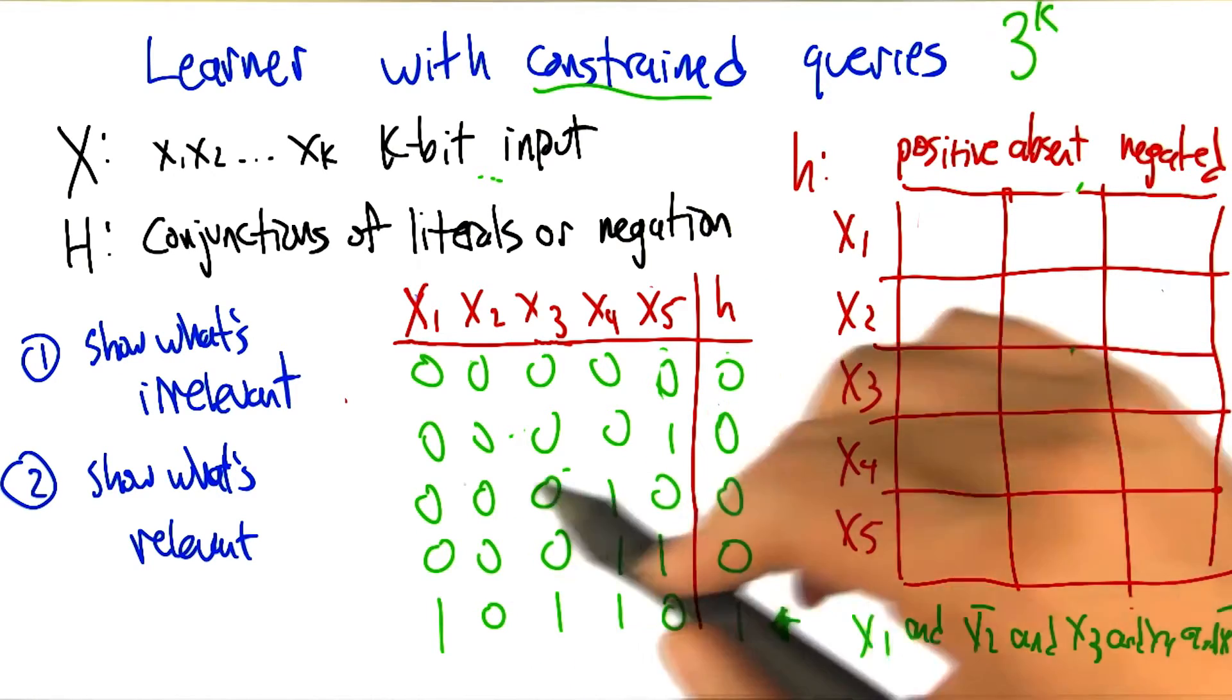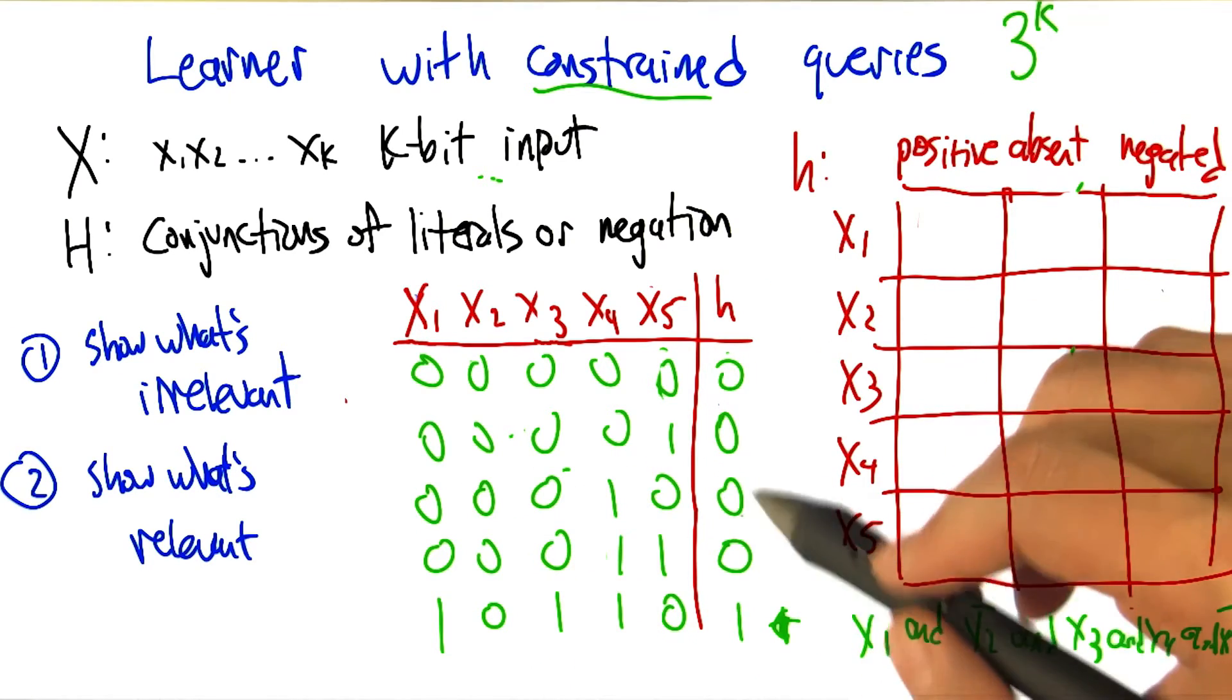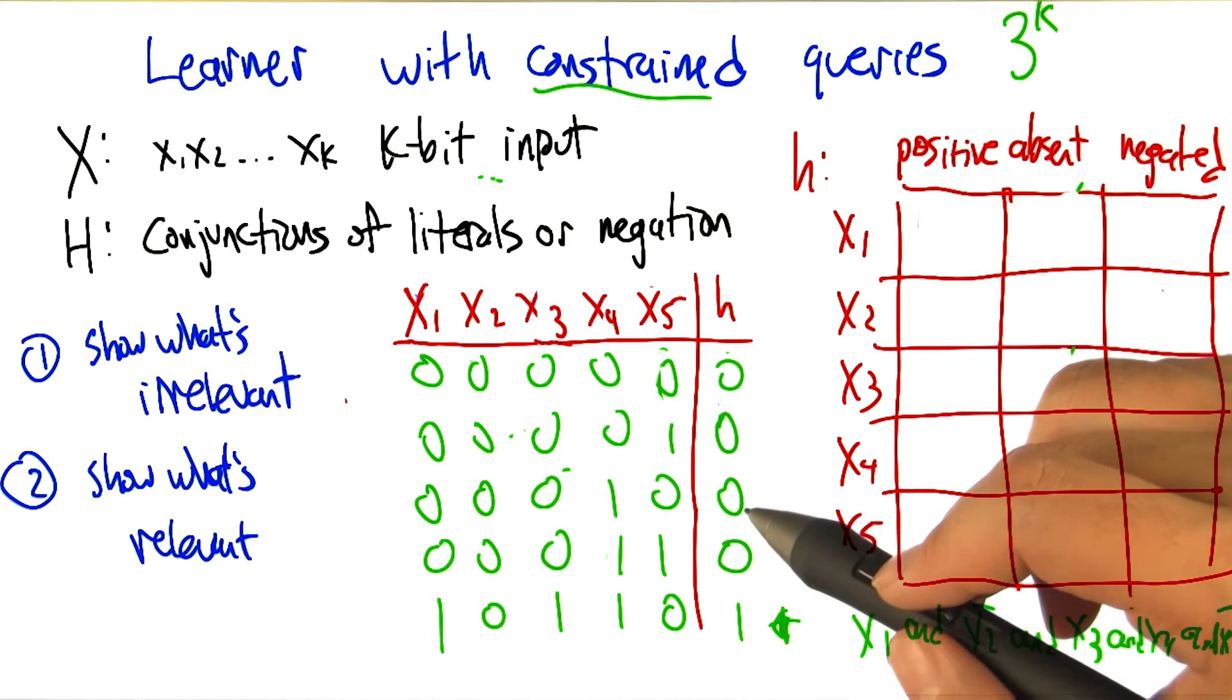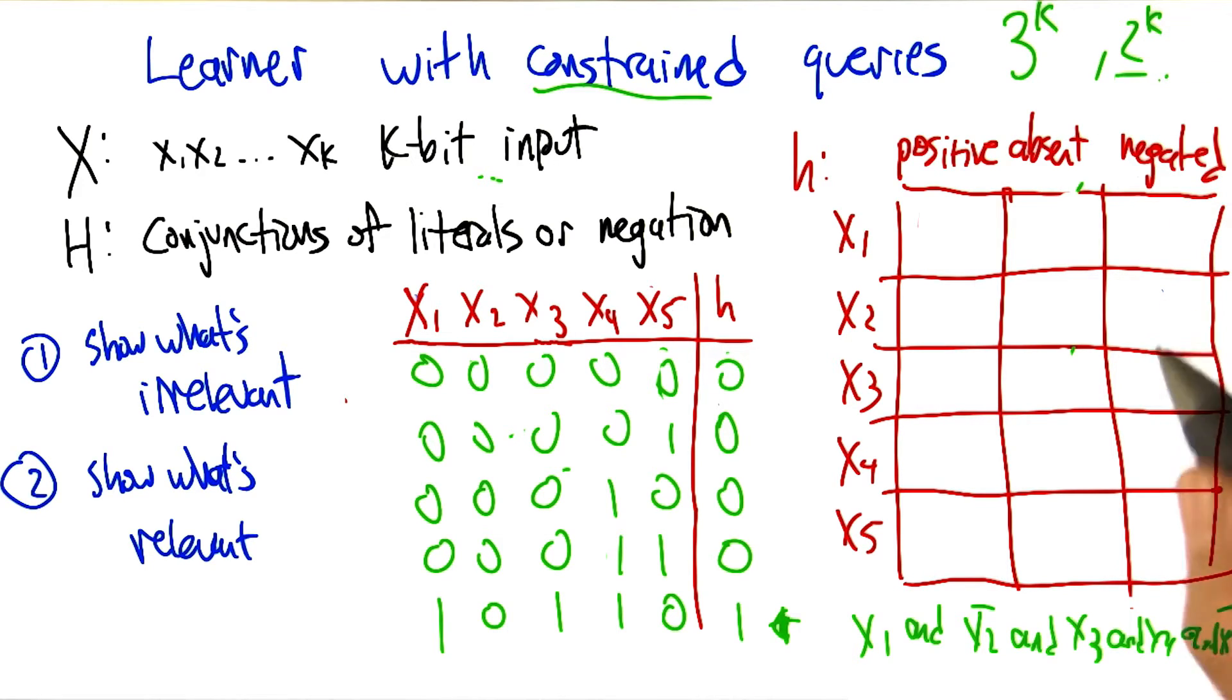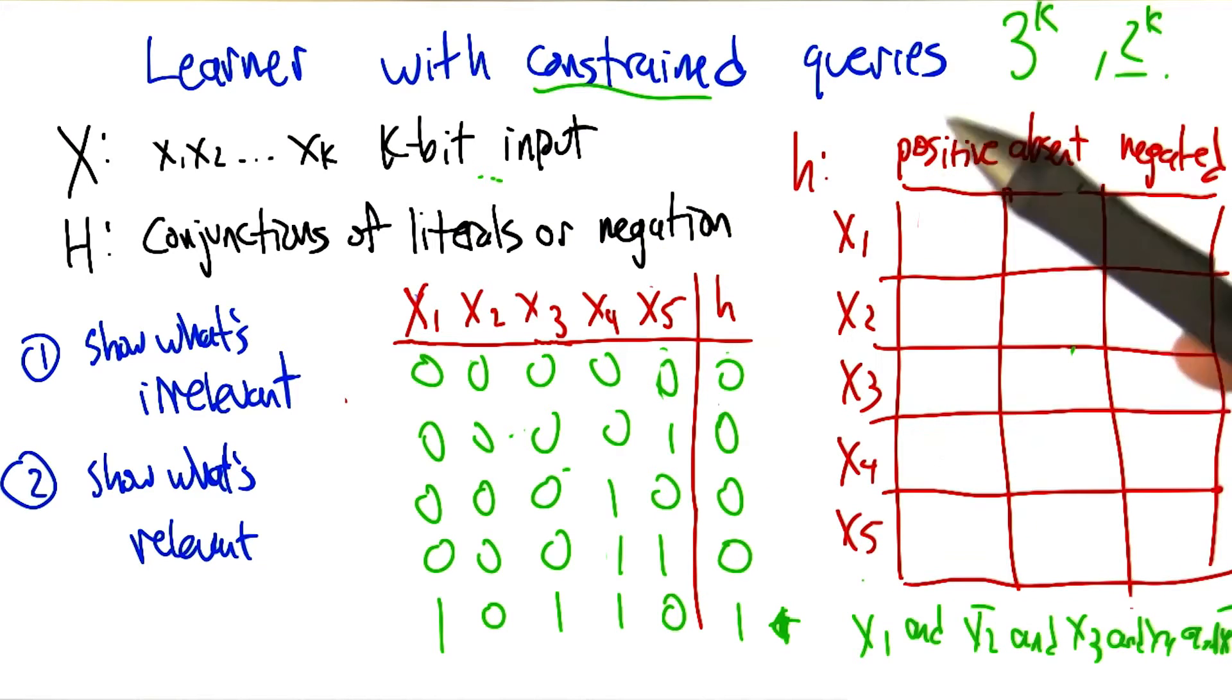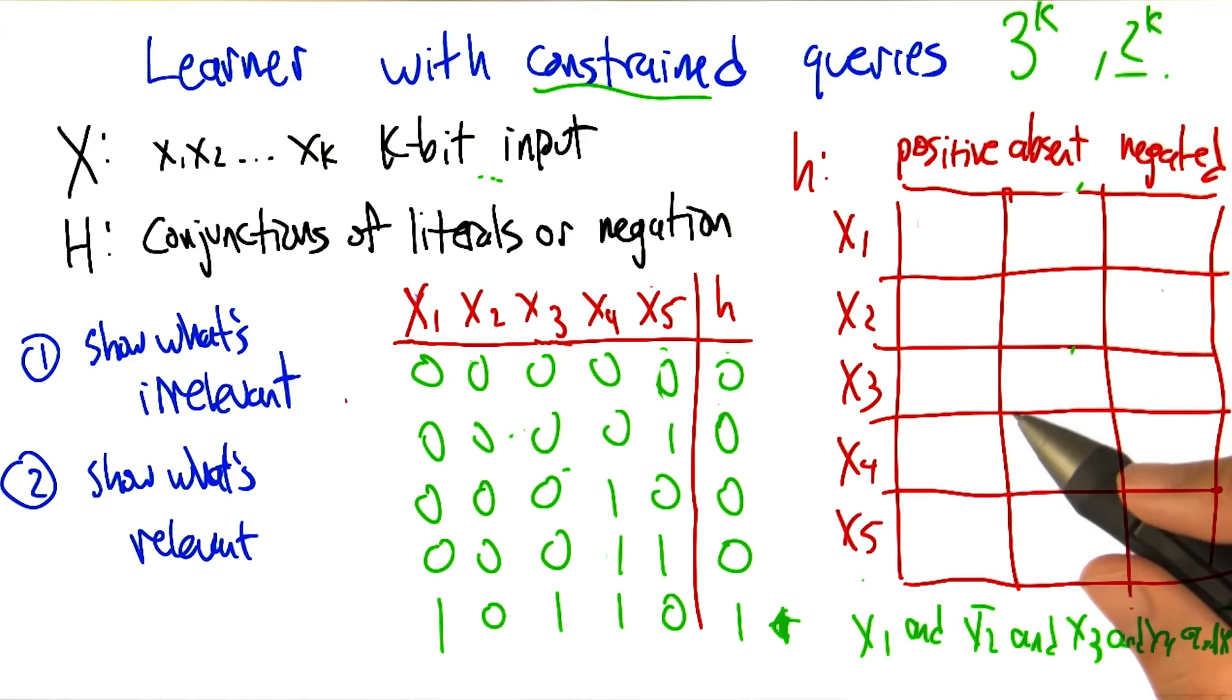You'd like to be able to ask a question that splits this hypothesis class in half. But unfortunately, almost all of your questions give very little information, just knocks out a couple of the possible hypotheses. And so it ends up being 2 to the k kind of time, not time, but samples, before you can get a handle on what the hypothesis is. So it's harder for the learner too.